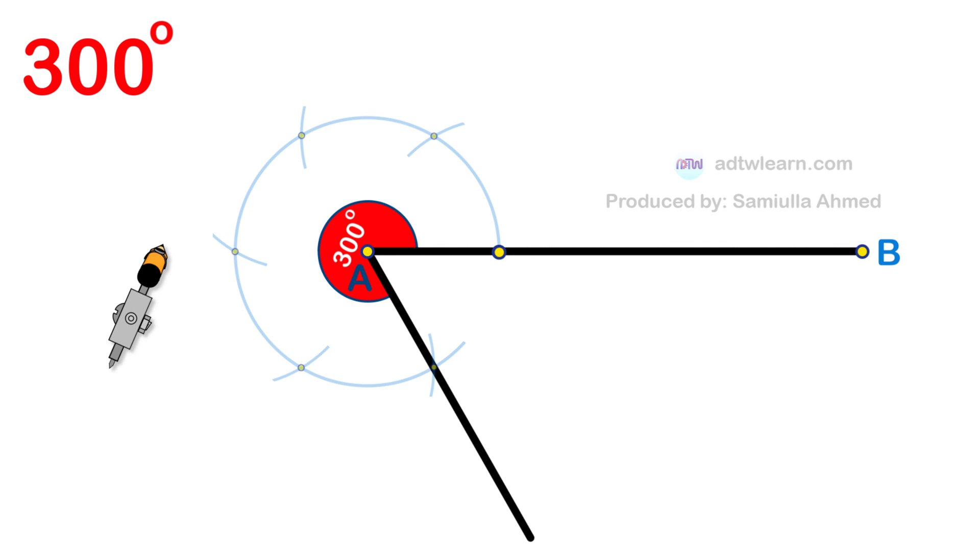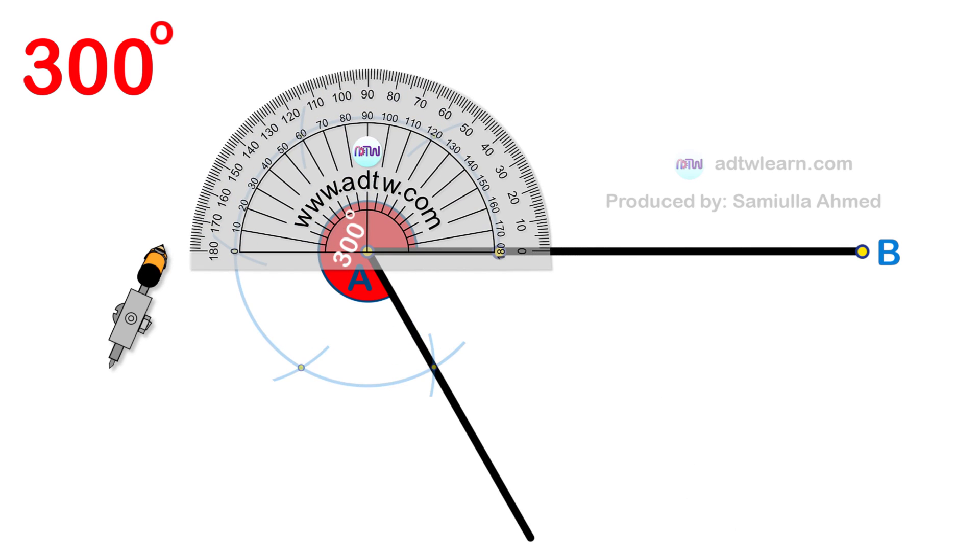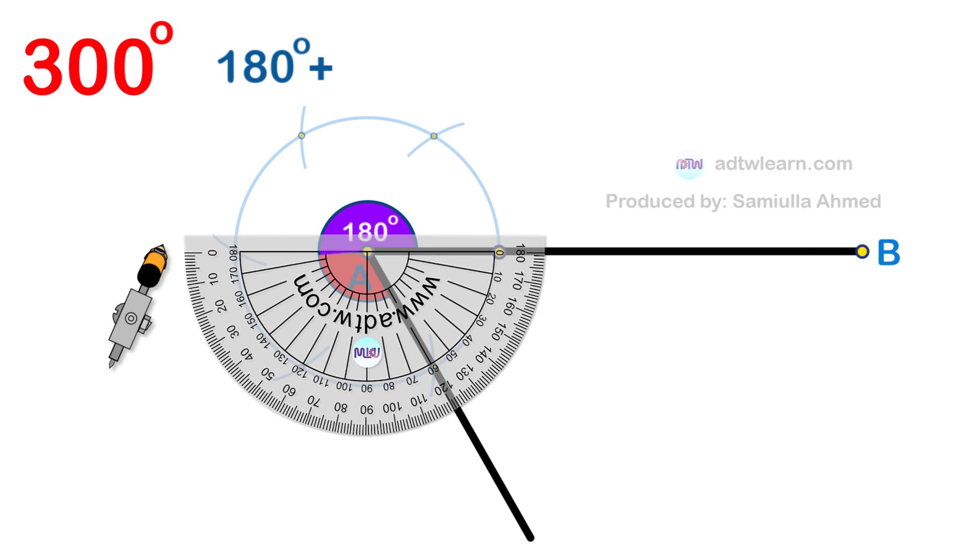You can cross-check by using a protractor. We can see the angle from here to here as 180 degrees, plus this 120 degree angle, which will be equal to 300 degrees.